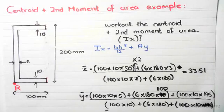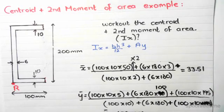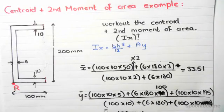First of all we obviously know that before we work out the second moment of area we need to work out the centroid. So how do we work out the centroid? Let's do X bar.